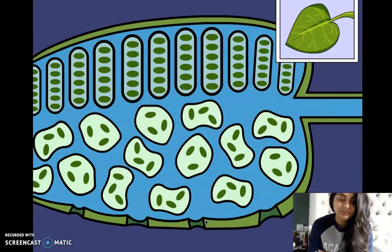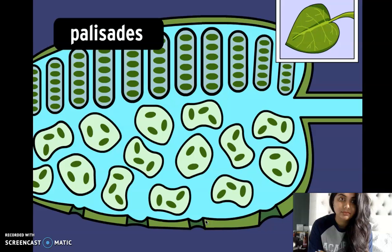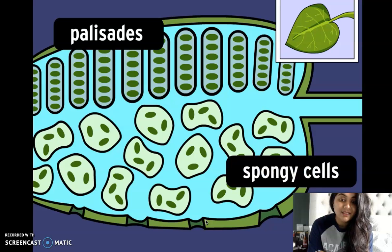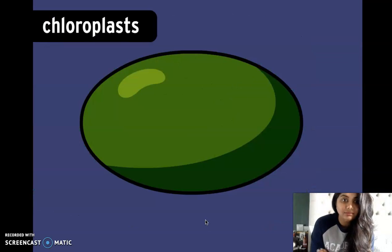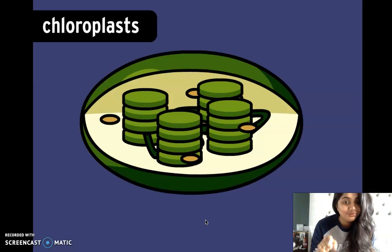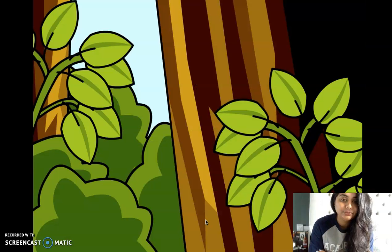The water and carbon dioxide spread through the leaves into cells called the palisade and spongy cells. These cells contain structures called chloroplasts, which are filled with a green pigment called chlorophyll. Chlorophyll is what makes green plants green.